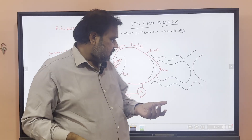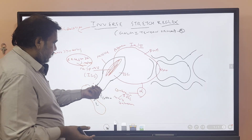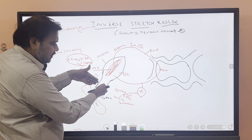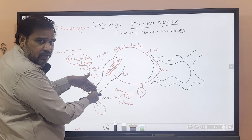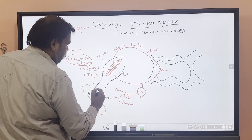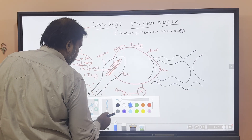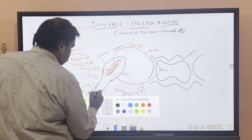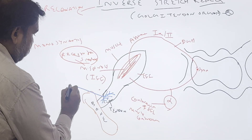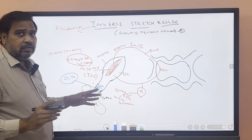Where is the Golgi tendon organ located? It is in the tendon of the muscle. The ends of the muscles are tendon, and the tendon is attached to the bone. I will draw the Golgi tendon organ here in blue color.